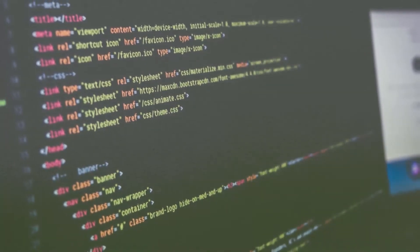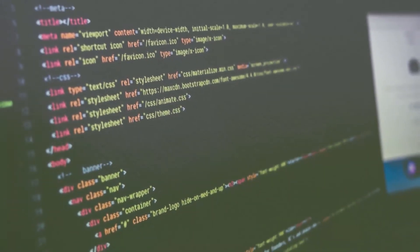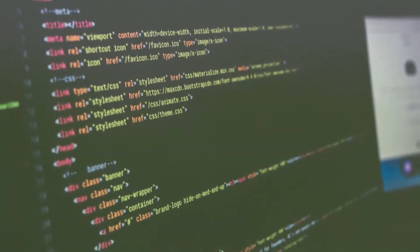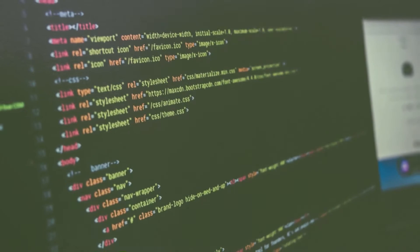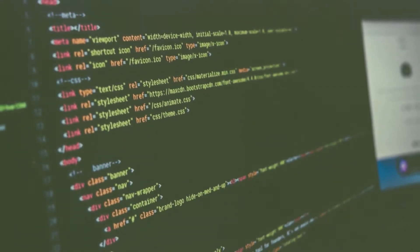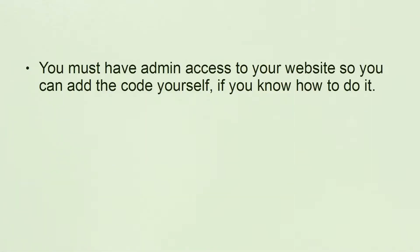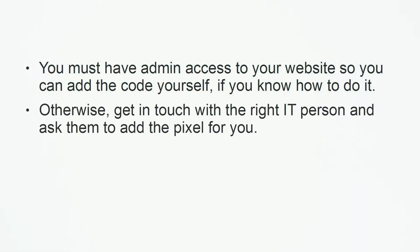Facebook Pixel is simply a snippet of code that you need to upload to your website's header. You must have admin access to your website so you can add the code yourself, if you know how to do it. Otherwise, get in touch with the right IT person and ask them to add the Pixel for you.